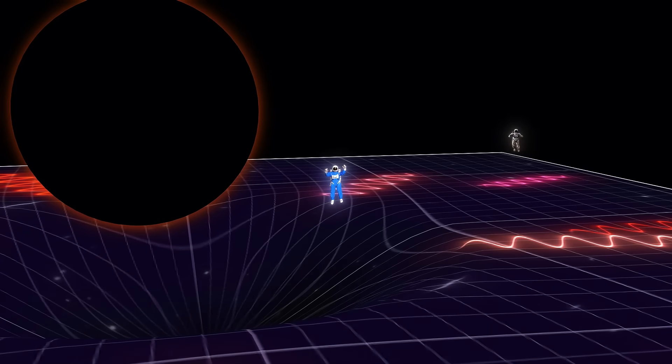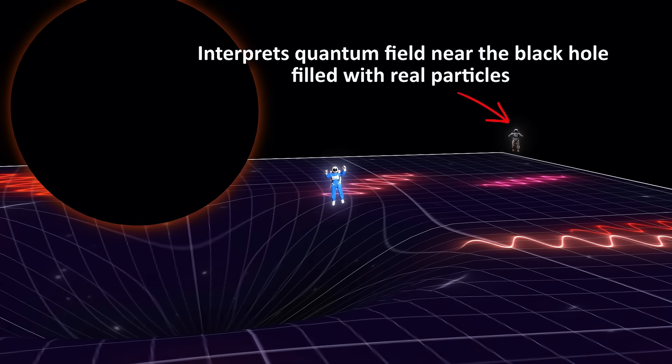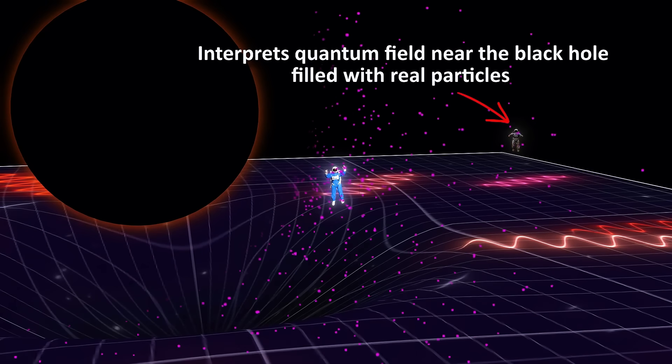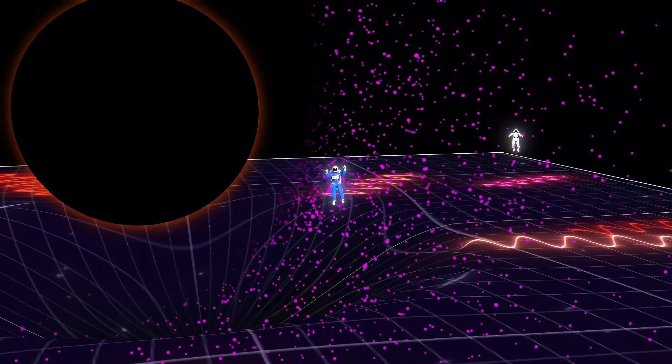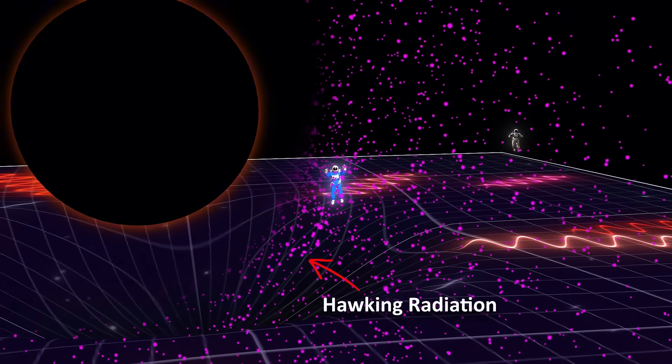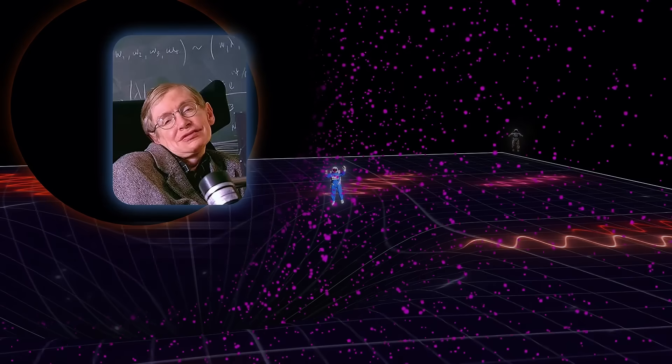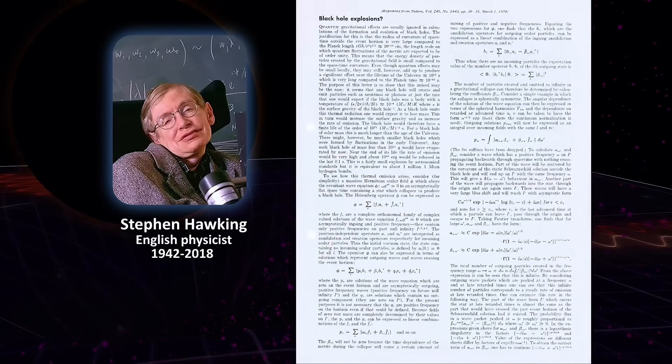So the bottom line is that the observer far from the black hole, who is unaffected by the extreme curvature of spacetime near the event horizon, will interpret the quantum field as being filled with real particles, which we observe as Hawking radiation. And this is what Hawking also described in his original paper.